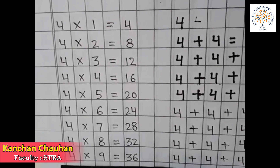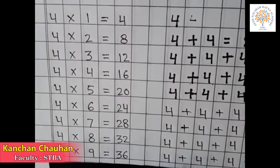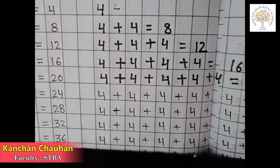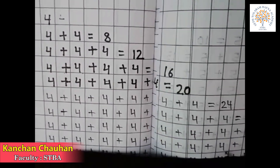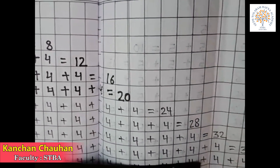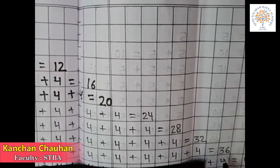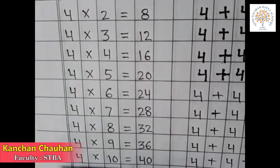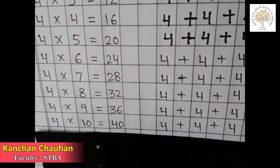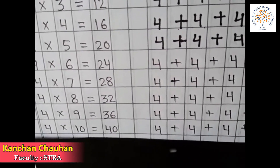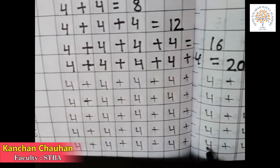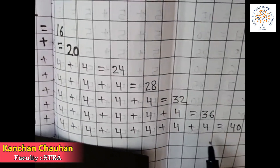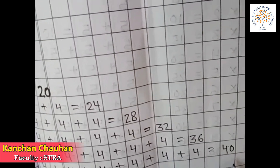4 9s are 36 — it means 9 times 4. 9 times 4 is equal to 36. 4 10s are 40 — it means 10 times 4. 10 times 4 is equal to 40.